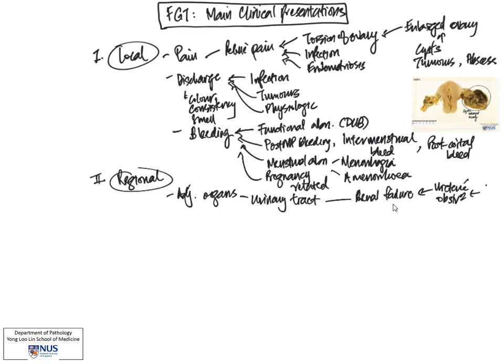Rarely, there can be fistulas occurring, for example, between the vagina and the bladder. And this can sometimes occur in tumors that affect the vagina. And this is actually quite clinically devastating because it results in constant urine discharge from the vagina.